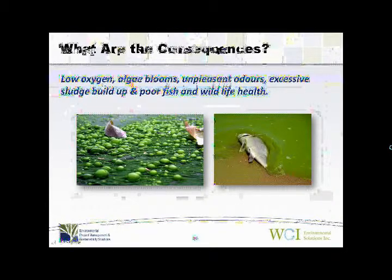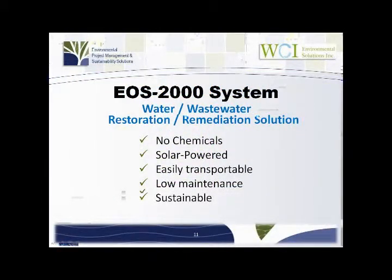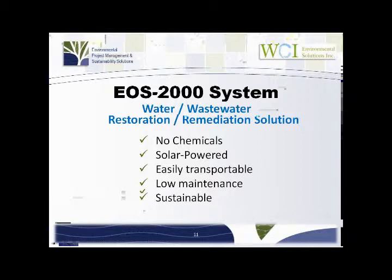Now that we've understood the problems of water, let's introduce an alternative solution — the EOS 2000 system for water and wastewater restoration and remediation. This system removes the dependence on chemicals or mechanical aeration. It's 100% natural and uses the dynamic nature of natural aerobic processes. It involves no chemicals, it's solar powered, very easily transportable, low maintenance, and a sustainable solution.